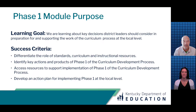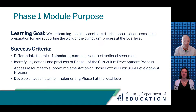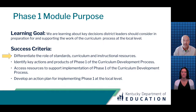Now that you have a preliminary sense of where you might be relative to our learning goal, let's move into success criteria for Module 1. Our success criteria are: differentiate the role of standards, curriculum, and instructional resources; identify key actions and products of Phase 1 of the curriculum development process; access resources to support implementation of Phase 1; and develop an action plan for implementing Phase 1 at the local level. We will begin by taking up the first success criterion: differentiate the role of standards, curriculum, and instructional resources.